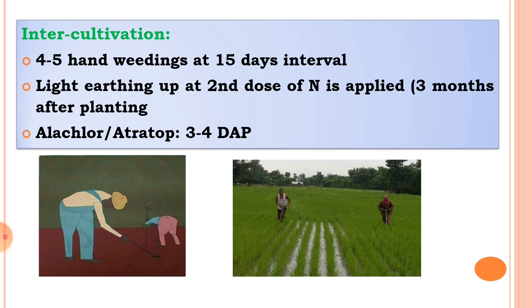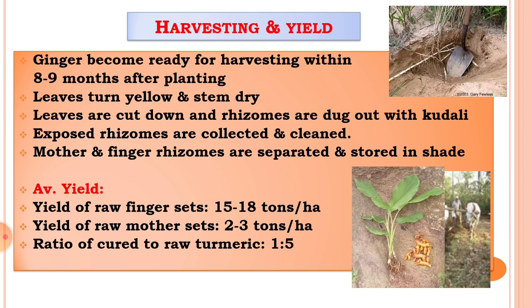For the chemical control of weeds, herbicides are also used for weed growth control. These are the inter-cultivation practices in turmeric crop.